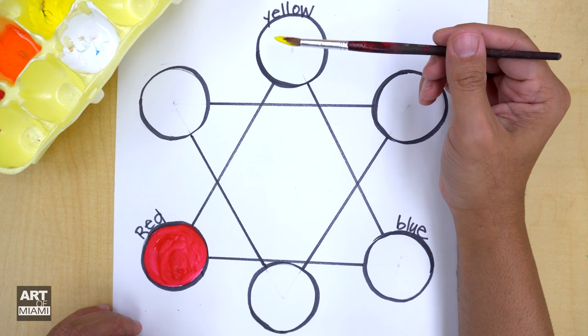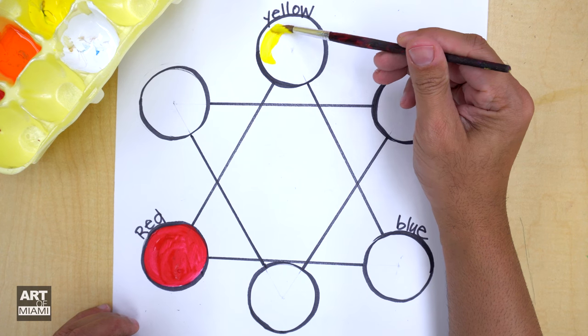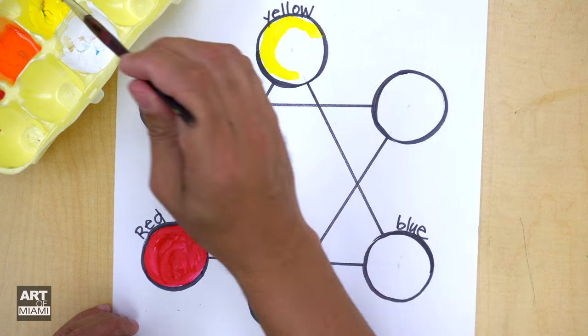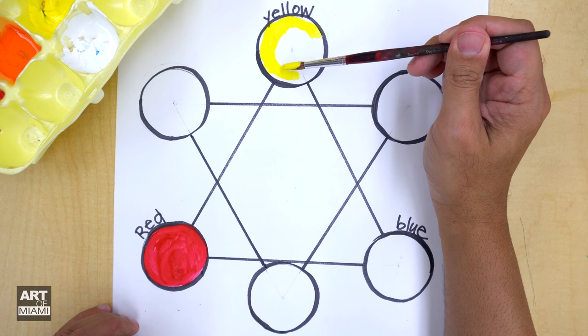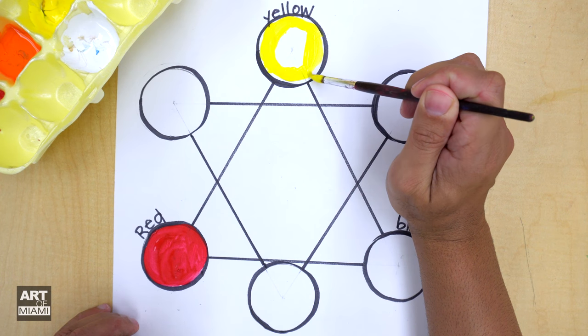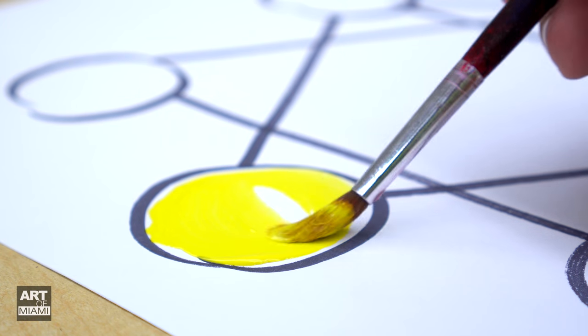All right, now that we have a clean brush, let's get yellow, which is our lightest color. Start with the edges. And then, once you have the edges done, you can fill in the inside. Like that.